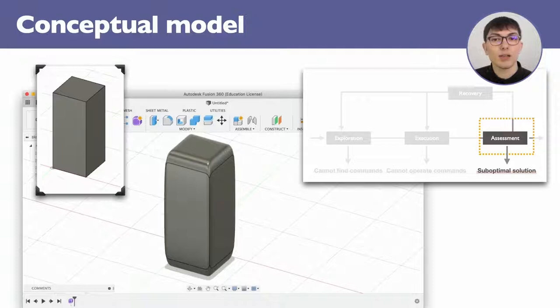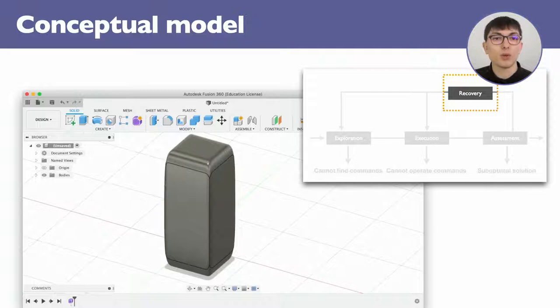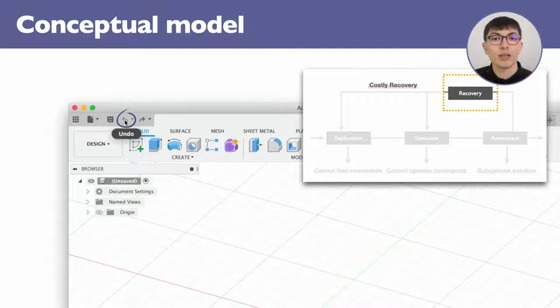In the recovery phase, users try to return to a clean state. This can be done manually or using undo mechanisms, knowing that the recovery can sometimes be difficult or costly. Otherwise, once the prior state is recovered, users can either switch to a different problem solving strategy, go back to the execution phase if they want to further experiment with the command, or return to the exploration phase to look for a different command and cycle through the phases of trial and error again.